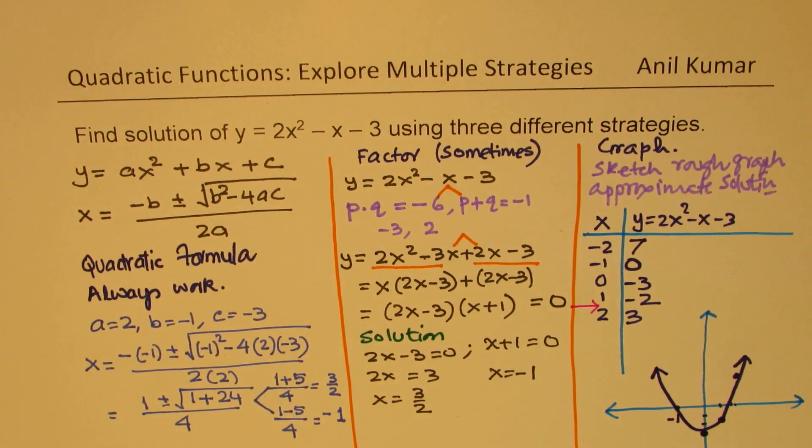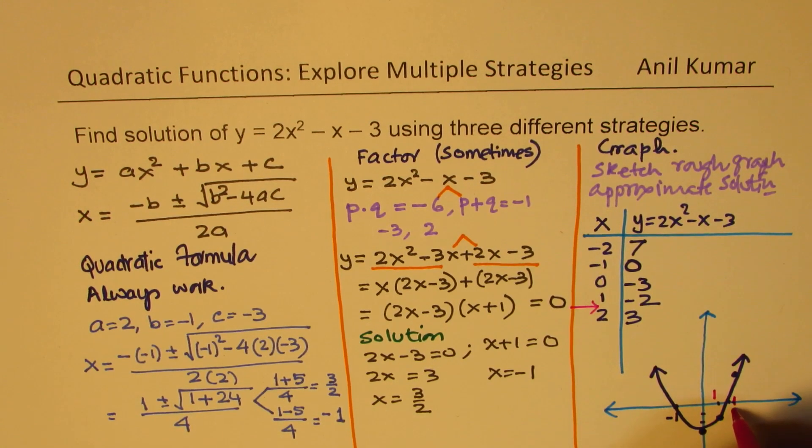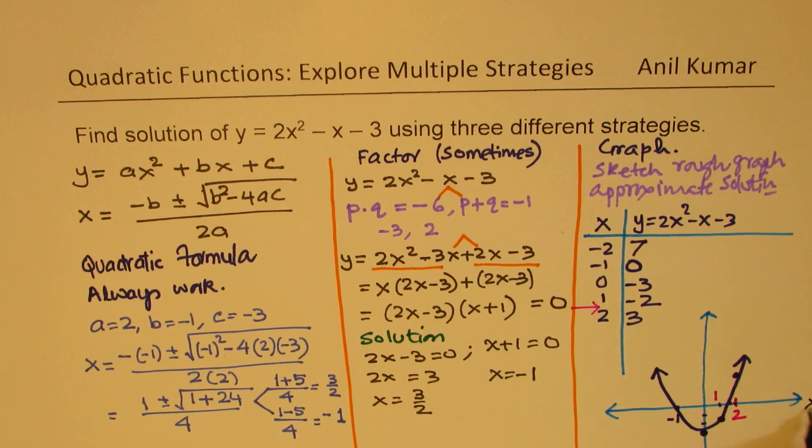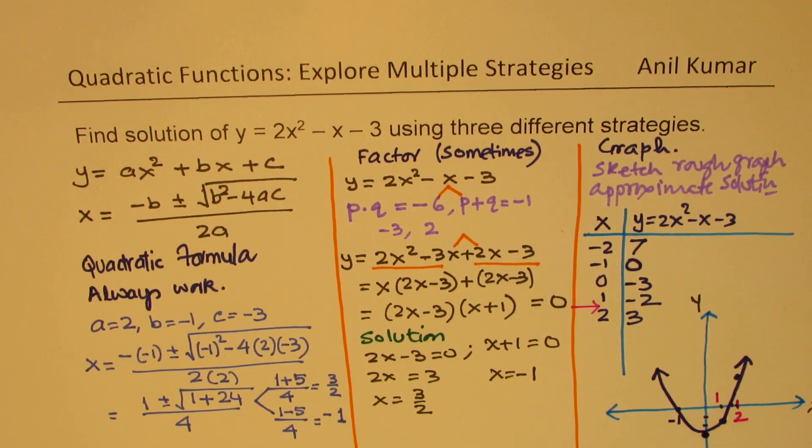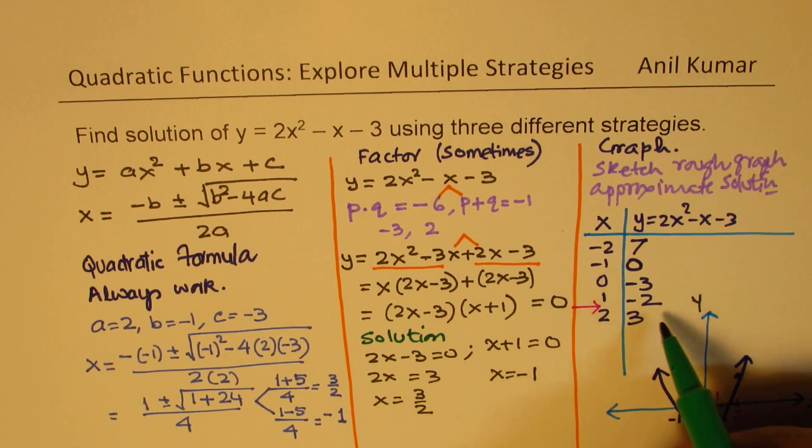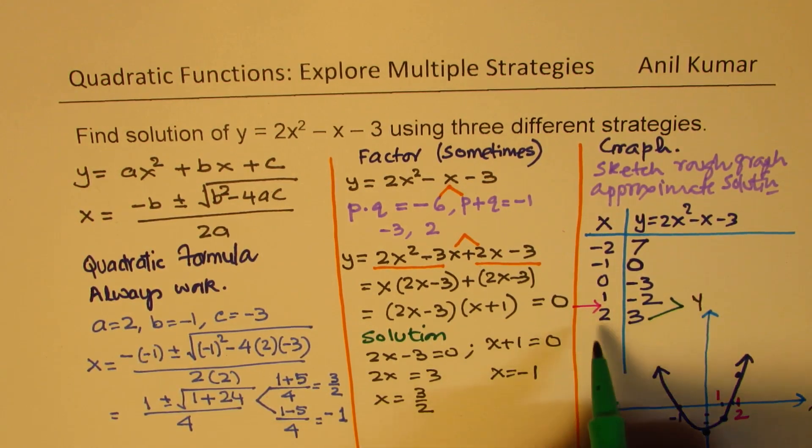Now clearly, we see that between 1 and 2, we are crossing the x-axis. So that means a solution lies between the value of 1 and 2. Is that correct? So what we could do is that we could squeeze in some values between 1 and 2. So we could squeeze in some values between 1 and 2.